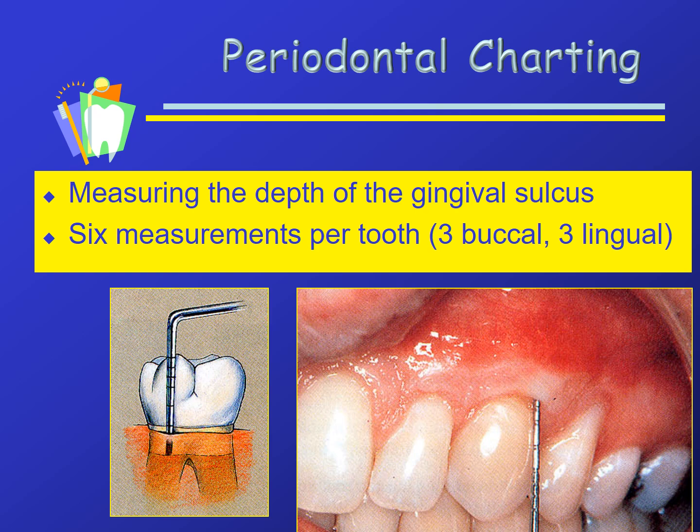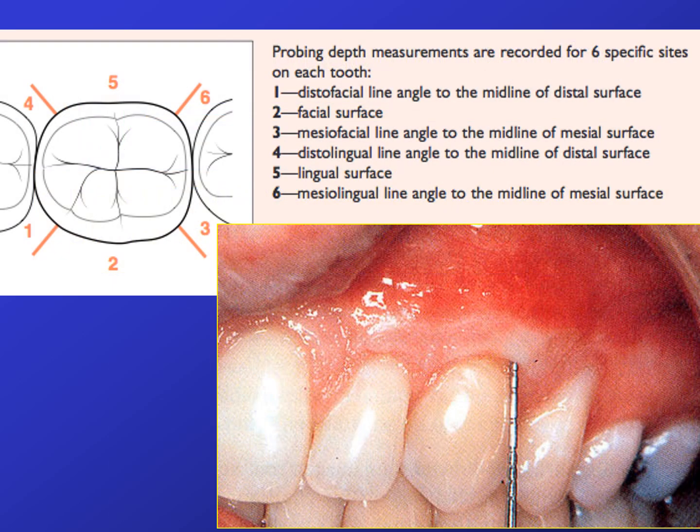The periodontal probe is placed in the pocket between the gingiva and the tooth. The probe is walked from the distofacial to the mesiofacial and 3 measurements are noted and recorded. The numbers at positions 2 and 5 are commonly referred to as straight facial and straight lingual. The clinical photo shows the probe positioned about halfway between the distofacial and the straight facial.